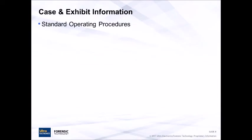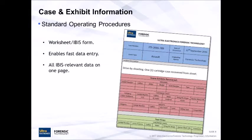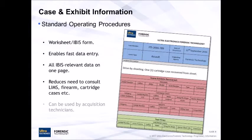It's also really helpful to have a worksheet that contains all the IBIS-relevant data on one page. This allows users to enter data quickly and reduces the need to consult secondary sources such as a LIMS system or case notes to create accurate cases and exhibits. Some labs use these worksheets with diagrams of the cartridge case on them, so they can indicate where ejector marks and extractor marks are — very useful if the acquisition technicians don't have a lot of firearms examination expertise.